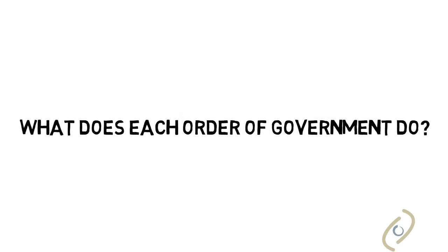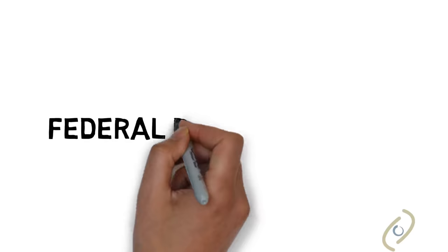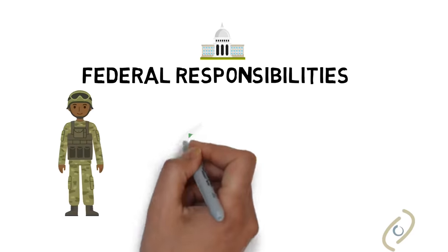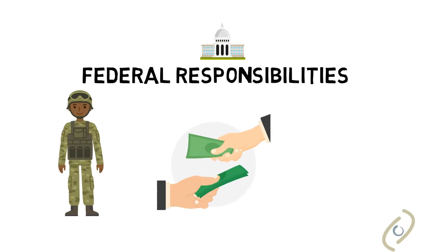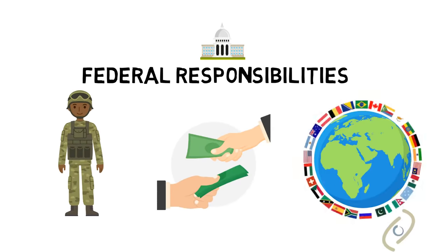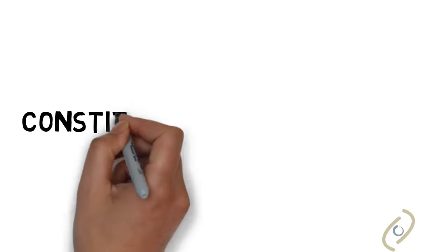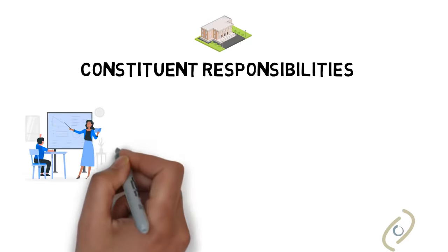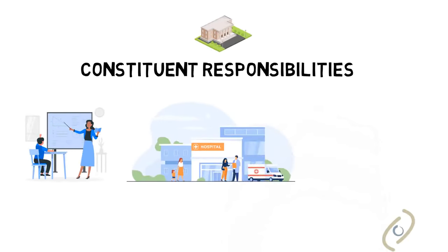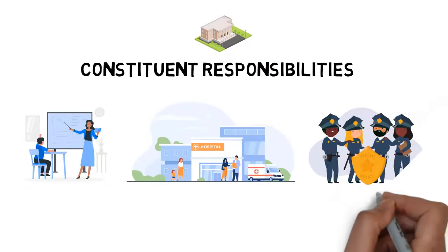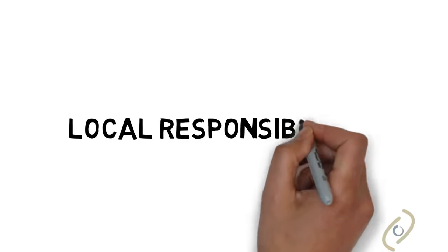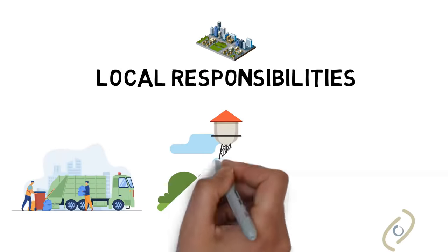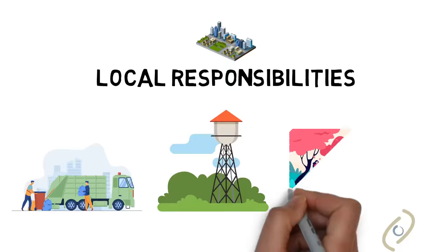These orders of government are organized on the basis of self-rule and shared rule. The federal government is responsible for common purposes such as national defense, currency, and foreign relations. The constituent governments usually have control over matters within their jurisdiction — this could include education, health, and policing. Local governments tend to deal with issues of sanitation, water supply, and public parks.